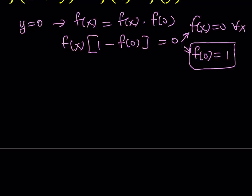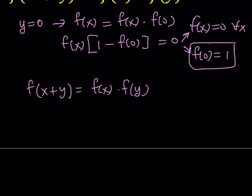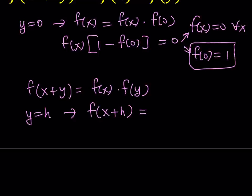Let me rewrite the equation one more time: f of x plus y equals f of x times f of y. Now I'm going to replace y with h — you'll see in a little bit why I do that. Remember I mentioned I'll be using differentiation. So f of x plus h can be written as f of x times f of h.